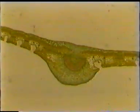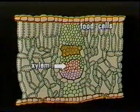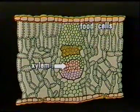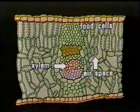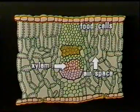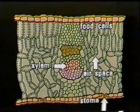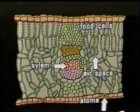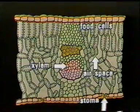These veins branch and re-branch into tiny vessels which end in air spaces found among the food cells. Some of this water diffuses into the fruit cells while the rest diffuses into the air spaces. As more and more water gathers here, diffusion of this water out of the leaf takes place through tiny pores on the leaf surface. Remember the force I mentioned just now that causes water and mineral salts to flow upwards through the plant?